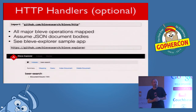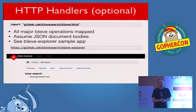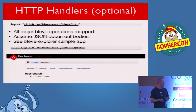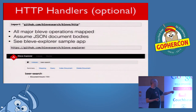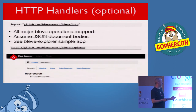Bleve also comes with optional HTTP handlers. Everything we've seen so far is programmatic, but sometimes you want to expose this over a web interface. The handlers map all the major Bleve operations into HTTP requests, assuming incoming data is JSON — so your index mapping can be specified in JSON and document bodies are assumed to be JSON. We built a sample app called Bleve Explorer that wires all this up. For new users, it looks very much like a single node of Elasticsearch, so if you're familiar with that, this would feel very familiar.